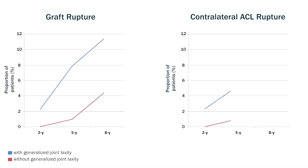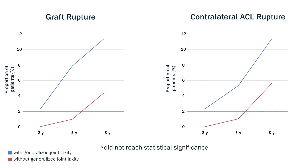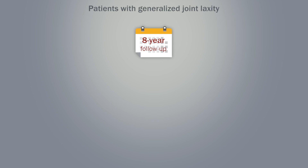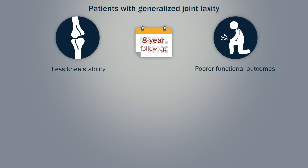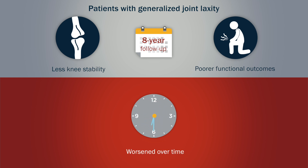The researchers found that the rates of graft rupture and contralateral ACL injury in patients with generalized joint laxity were higher than in those without generalized joint laxity during the whole study period. However, the cumulative rupture rates did not reach statistical significance. At the eight-year follow-up, patients with generalized joint laxity had less knee stability and poorer functional outcomes compared with patients without generalized joint laxity. Moreover, these parameters worsened over time in the group of patients with generalized joint laxity.